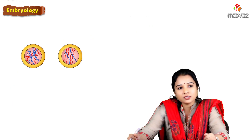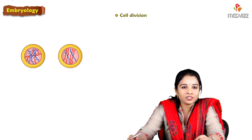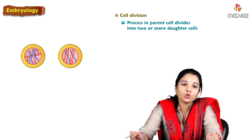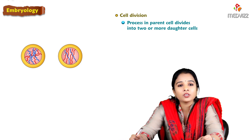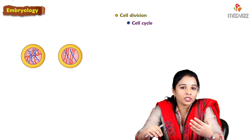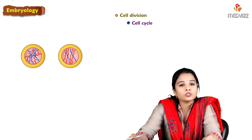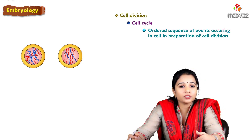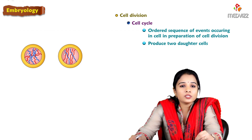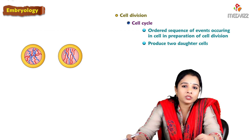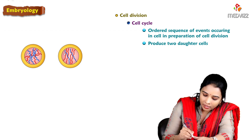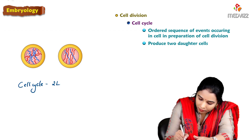Before going into these stages, a basic concept in embryology is cell division. Cell division is the process by which a parent cell divides into two or more daughter cells. The cell has a cycle — the cyclical changes happening in a cell before and after division are called the cell cycle. The cell cycle is an ordered sequence of events in preparation for cell division. The total cell cycle time for a typically rapidly dividing human cell is 24 hours.